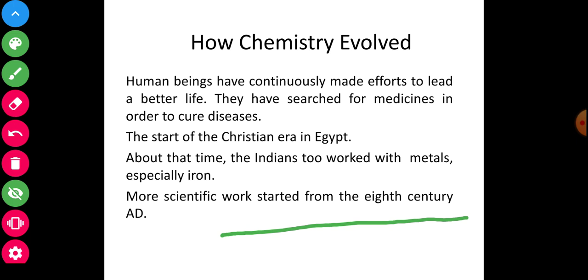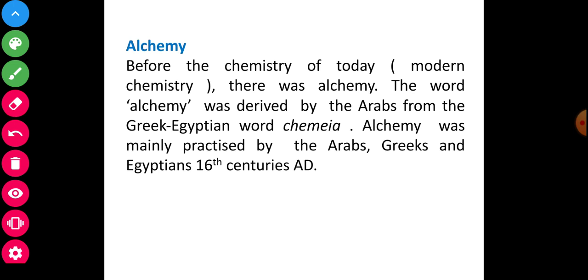The word related to alchemy. Before the chemistry of today, modern chemistry, there was alchemy in ancient times. The word alchemy was derived by the Arabs from the Greek-Egyptian word chemeia. Alchemy was mainly practiced by the Arabs, Greeks, and Egyptians in the 16th century.